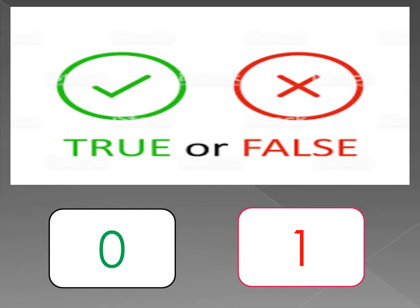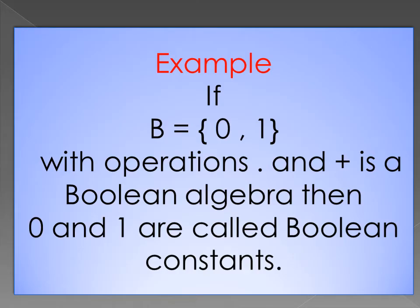Where 0 represents the true value and 1 represents the false value. For example, if a set B has elements 0 and 1 with operations multiplication and addition and is a boolean algebra, then the elements 0 and 1 are called boolean constants.